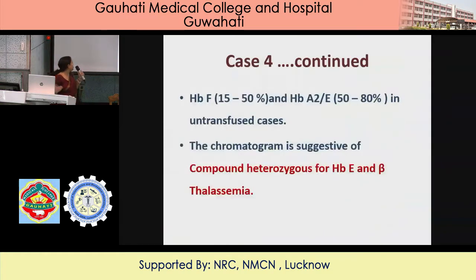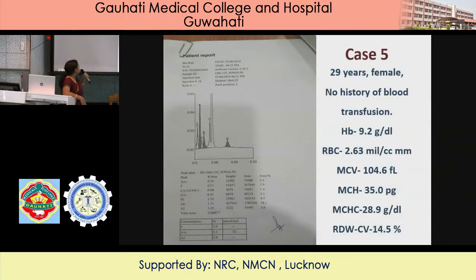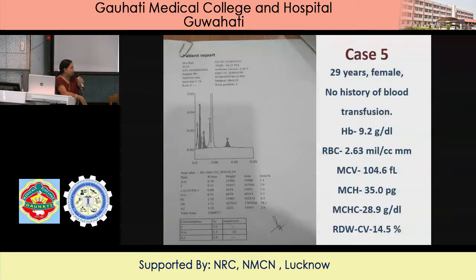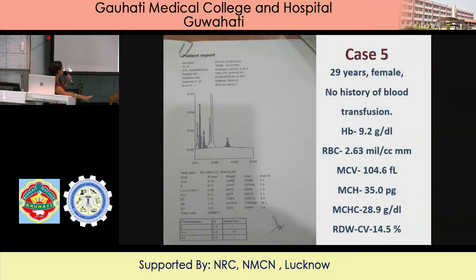So that case was compound heterozygous for hemoglobin E and beta thalassemia. Next case: 25-year female, no history of blood transfusion. Hemoglobin 9.2, RBC 2.63, MCV 104.6, MCH 35, MCHC 28.9, RDW 14.5. F is 7.9, there is no unknown peak before F, everything else is normal, A2 is normal, adult hemoglobin is 78.1. What could be the diagnosis?